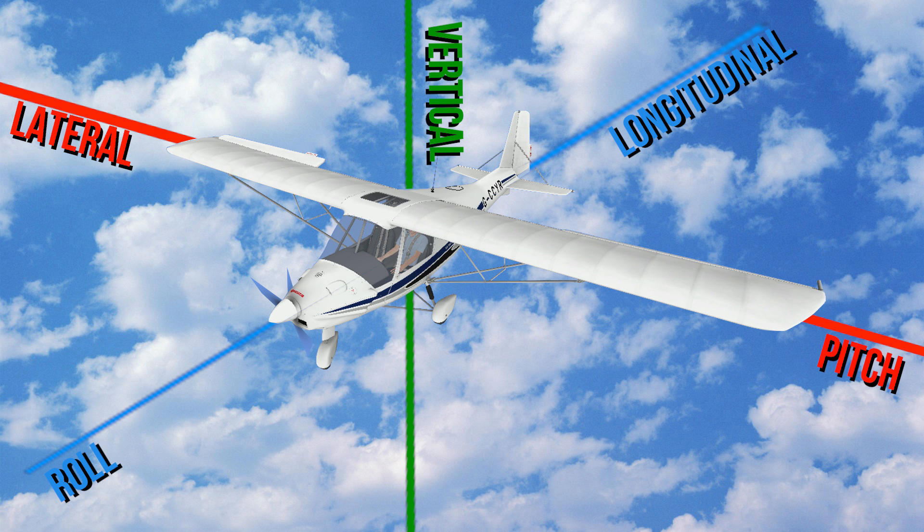And finally the vertical axis, or the normal axis, which we yaw around. This is similar to a boat, where the rudder is used on the vertical stabiliser.